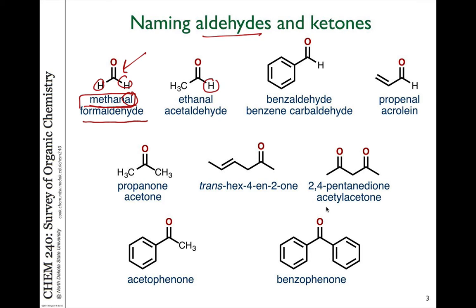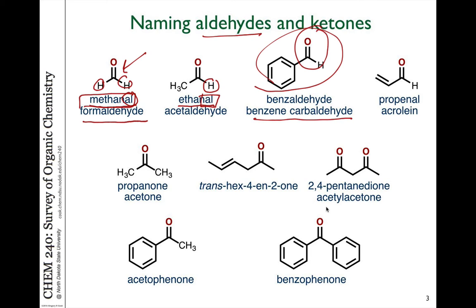If it's a two-carbon molecule, this is ethanal — drop the -E, add the -AL ending to ethane, and you get ethanal. The benzene molecule, which we've seen in the aromatic chapter, is referred to as benzaldehyde. In some rare occasions this can be called a carbaldehyde group, so benzene carbaldehyde is a common name for this molecule. If there's a double bond, you have to give the -E for the double bond, so without the carbonyl oxygen this would be propene. With the aldehyde present, we would refer to this as propenal. So all of these are examples of aldehydes.